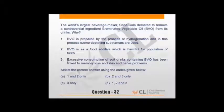Recently, brominated vegetable oil has been removed. Why has it been removed? In many countries it has been banned and its excessive consumption linked to memory loss, skin and nerve problems. So that is correct, the only reason. It is prepared by hydrogenation and in this process ozone depleting substances are used - mark that. BVO is food additive harmful for population of bees - nothing like that. So option three stands correct.